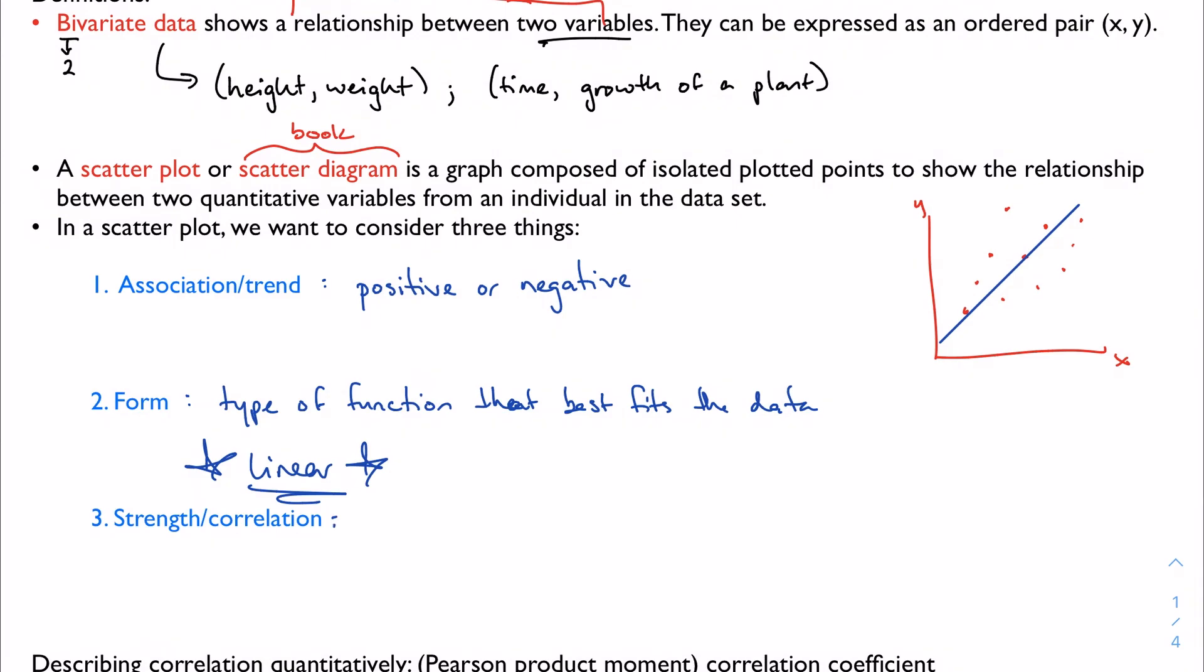The last thing we want to talk about is strength and correlation, and that talks about how well the trend fits the association form, or the model. We're going to start by talking about correlation quantitatively because I think it's easier to understand that way and show pictures of what that looks like.